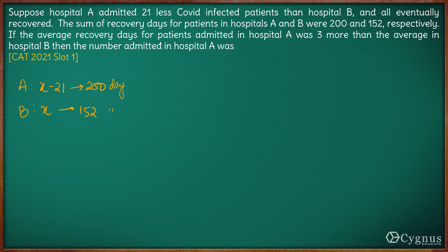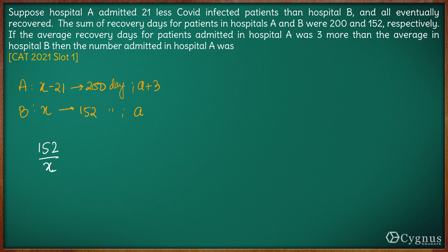Now, if the average recovery days for patients admitted in hospital A was 3 more than the average in hospital B, let the average in hospital B be 'a', then the average in hospital A is a plus 3. The average number of days for hospital B patients is 152 divided by the number of patients, x.